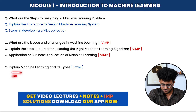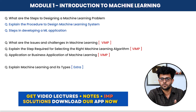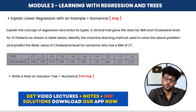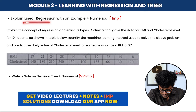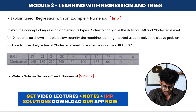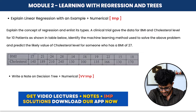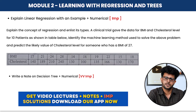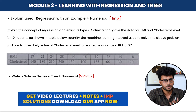An extra but recommended topic is experimental machine learning and its types — supervised, unsupervised, and reinforcement learning. For Module 2, there are numericals. The main numerical is linear regression. For example, you may be given BMI and cholesterol level data and asked: if BMI is 22, what will the output be? These numericals are straightforward and all solutions will be explained clearly.